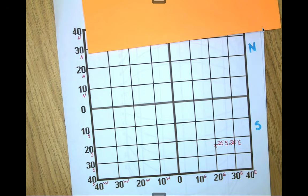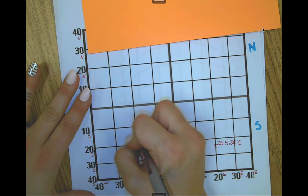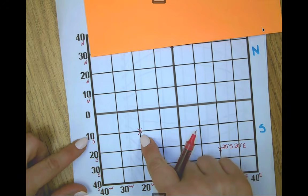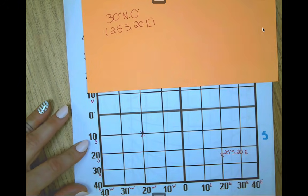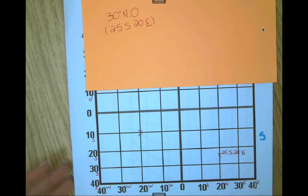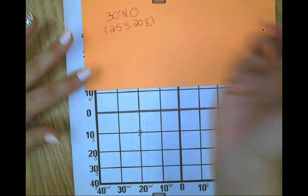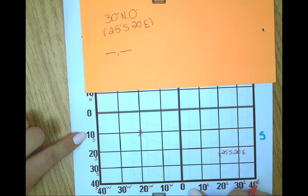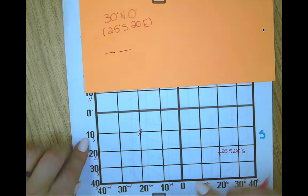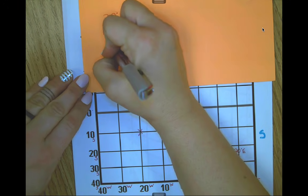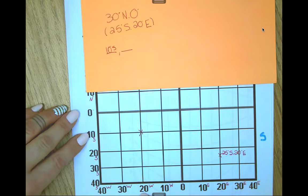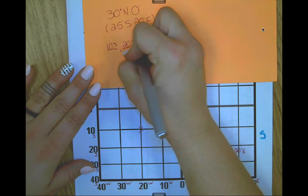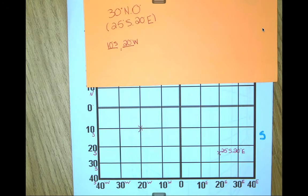We can also work backwards. If there is a given point and someone asks what is the longitude and latitude, it's simple — we just need to look. We're going to start with our latitude and longitude. So our latitude is going to be 10 degrees south, 20 degrees west. And that is latitude and longitude on this grid.